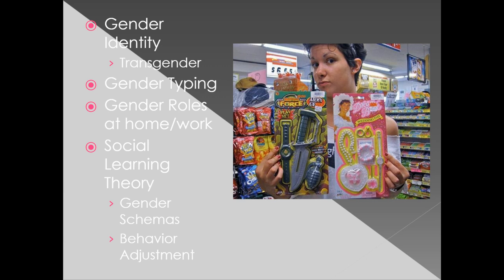The final idea we're going to look at is the social learning theory. In the social learning theory, kids develop gender schemas — conceptual ideas about what boys should do and what girls should do — learned from society, home, and peers. What you see is that most kids will make adjustments to their own behaviors to fit the schema they've developed, and that schema is based on gender stereotypes. Because of this behavior adjustment, you see people aligning their behavior with that stereotypical behavior as well. It's a pretty interesting idea because it really shows how gender stereotypes are perpetuated.